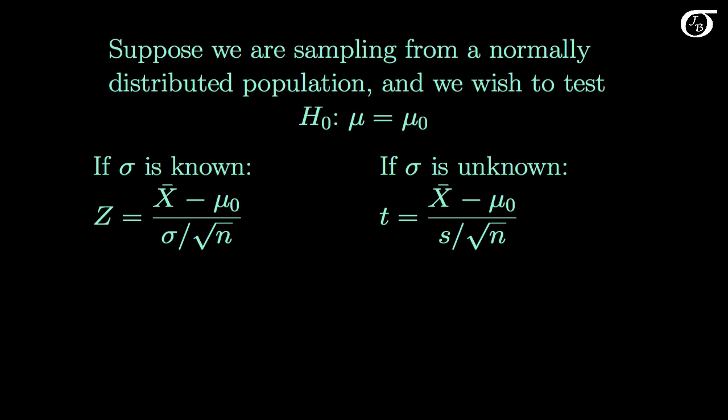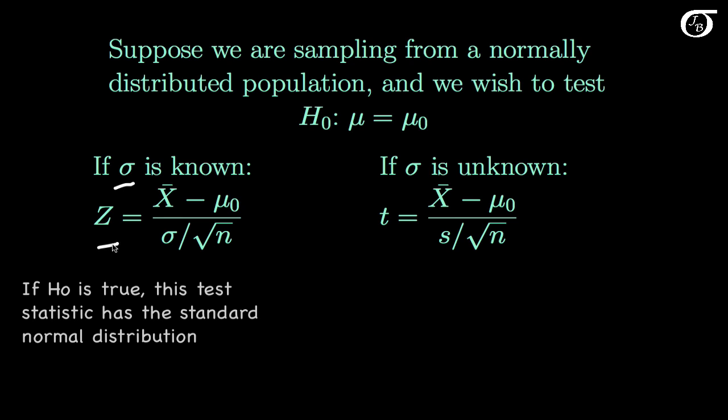If the population standard deviation sigma is known, then we would use this z-test statistic. And if the null hypothesis is true, this z-test statistic has the standard normal distribution.